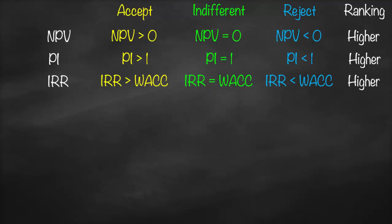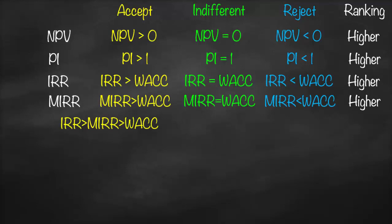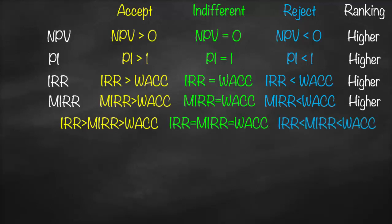Then we have Modified Internal Rate of Return (MIRR), because IRR has one major drawback: it assumes that all cash flows generated will be reinvested at the same higher IRR. Therefore we use MIRR. We accept if MIRR is greater than WACC, are indifferent if MIRR equals WACC, and reject if MIRR is lower than WACC. For mutually exclusive projects, we choose the higher MIRR. The relationship is: accept if IRR > MIRR > WACC; indifferent if IRR = MIRR = WACC; reject if IRR < MIRR < WACC.